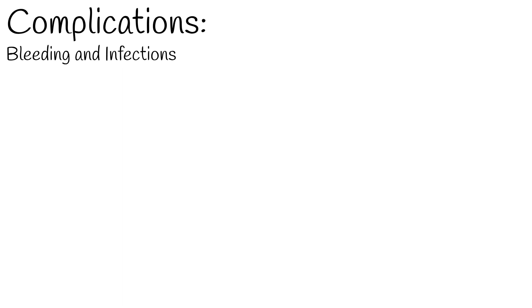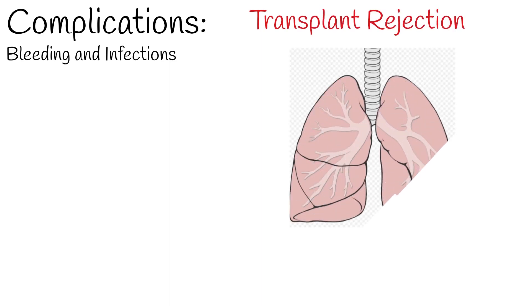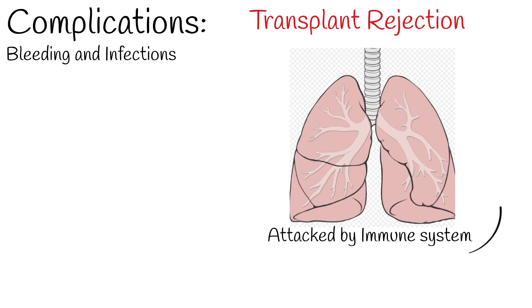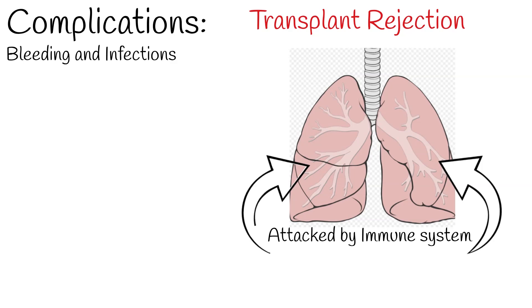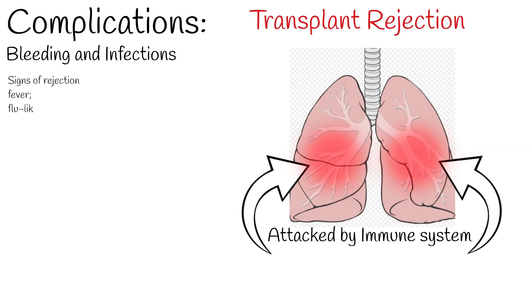After transplantation, as with any surgical procedure, there are risks of bleeding and infection. But the most concerning issue is transplant rejection. Because the transplanted lung comes from another person, the recipient's immune system will see it as an invader and attempt to neutralize it. Transplant rejection is a serious condition and must be treated as soon as possible. It is a risk both immediately after surgery and continuing throughout the patient's life, and can develop at any time after transplantation.